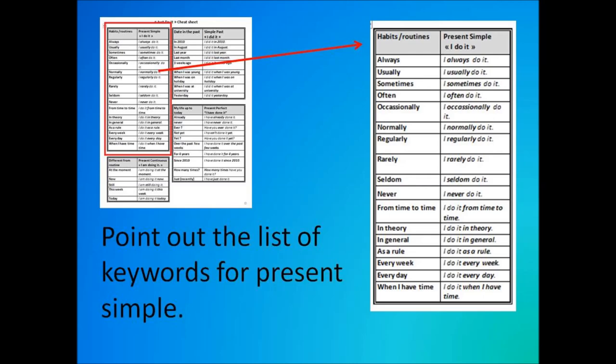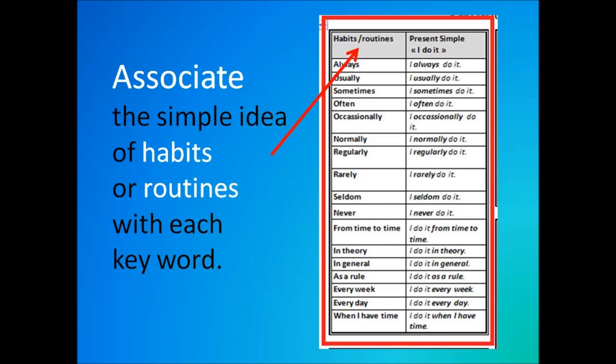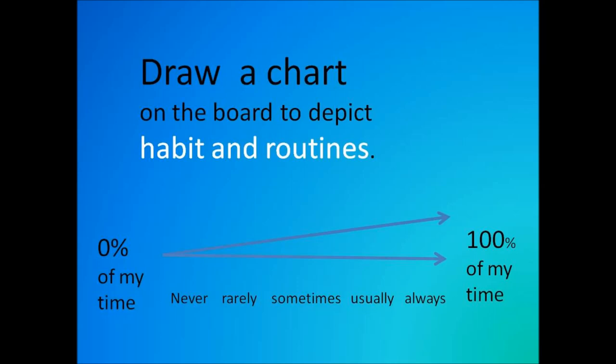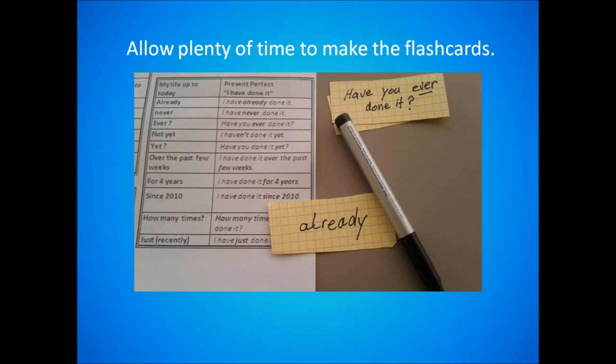Point out the list of keywords for present simple. Look how many there are. We use this tense a lot. Help your students to see the simple idea of habits with each keyword. Lower levels may have to translate in order to get the picture. Now associate the present simple phrase, I do it, with the idea of habits or routines and point out the word order. You may need to draw a chart on the board like this one to depict the frequency of habits and routines from 0% of the time to a hundred percent of the time. Or pull out one of your favorite graphics like a bar chart so students can visualize better.